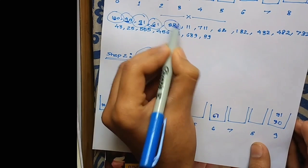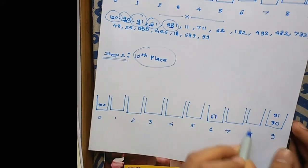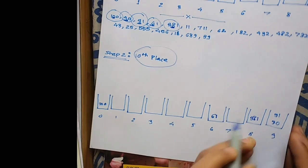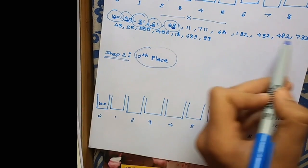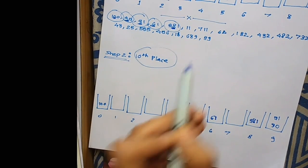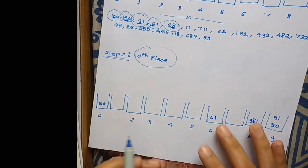In the number 981, the 10th place is 8, so it goes in bucket 8. Similarly, we have to sort each element from this list and put them into their respective buckets.